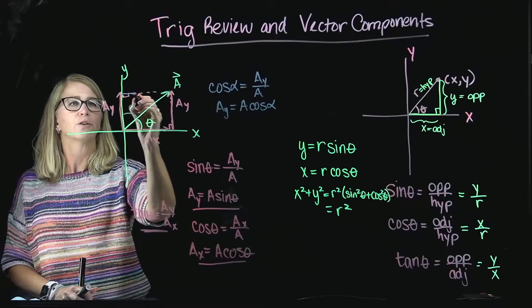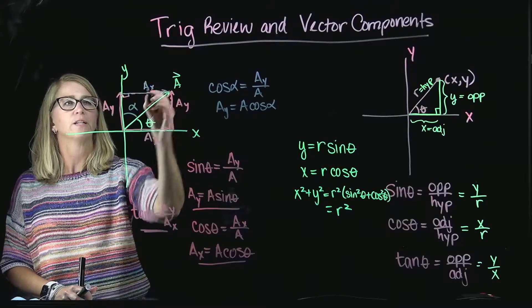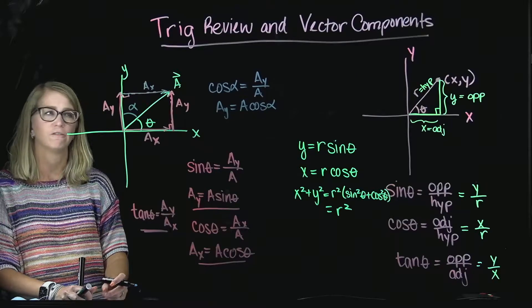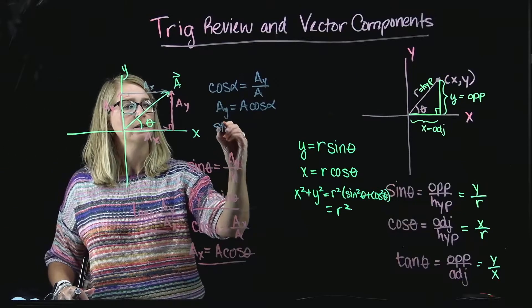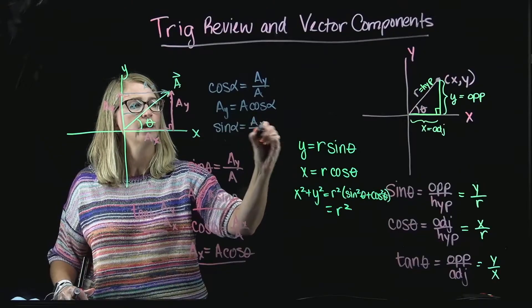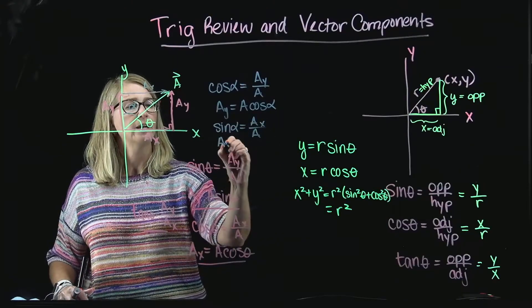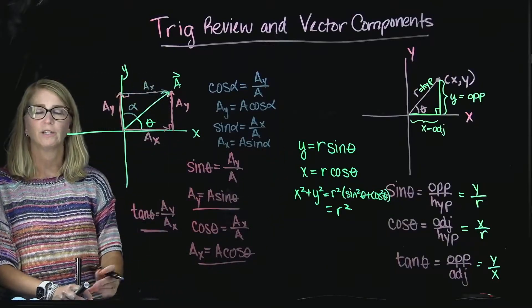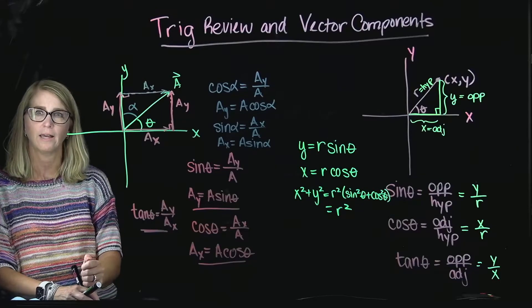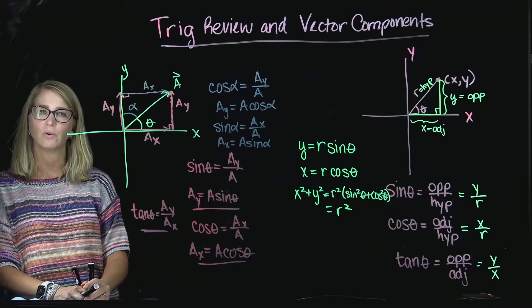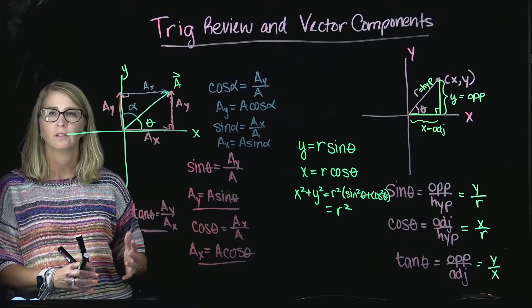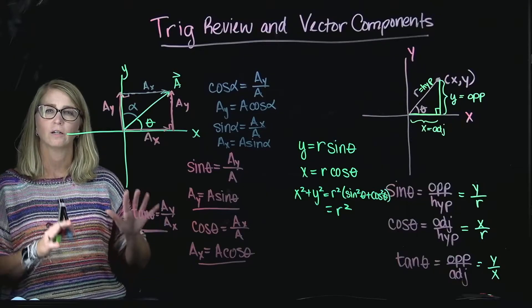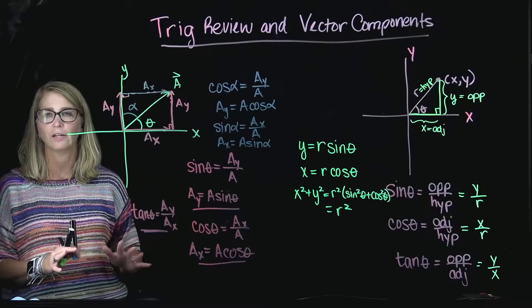In this particular arrangement, we could think about AX being drawn up here, and notice that it's opposite the angle alpha. So, the sine of alpha is AX over A, and so AX can be written as A sine of alpha. So, very quickly, I proved to you that you can't just blindly say that the X and the Y components go with cosine and sine. You have to think about how they are oriented relative to the angle that you're looking at.